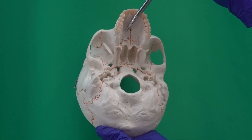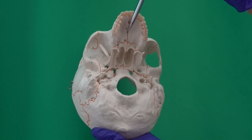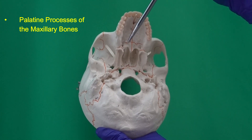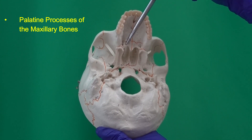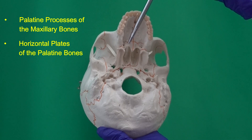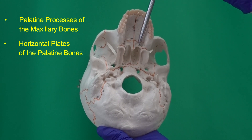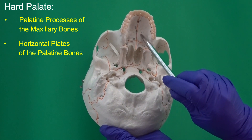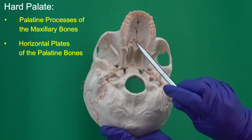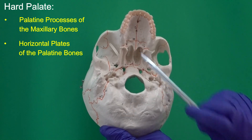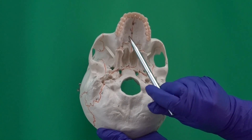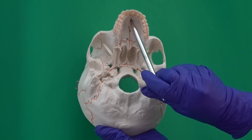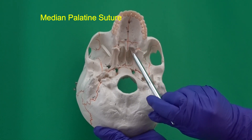We name this part of the maxillary bones that forms the front of the hard palate the palatine processes of the maxillary bones, and we name the sections of palatine bones that form the posterior of the hard palate the horizontal plates of palatine bones. So we say that the hard palate is made of palatine processes of the maxillary bones and horizontal plates of the palatine bones. Between the right and left processes or plates we have a suture called the median palatine suture.